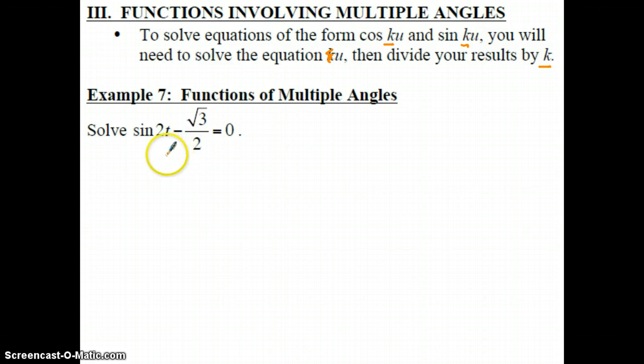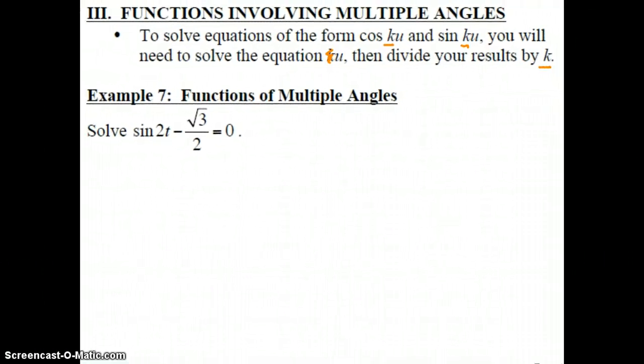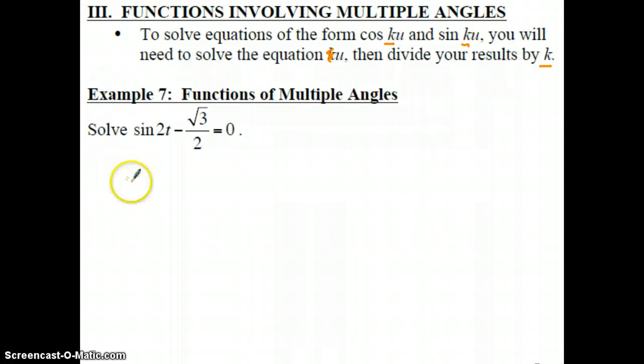So if we look at example 7, basically what you're going to be doing is solving sine of t equals radical 3 over 2. What we're going to do is disregard this 2 for the moment.